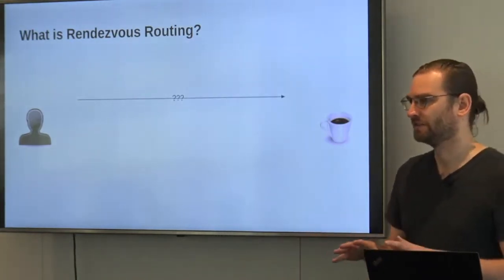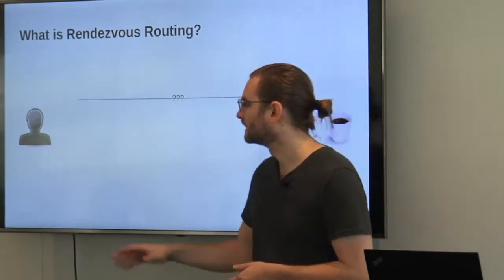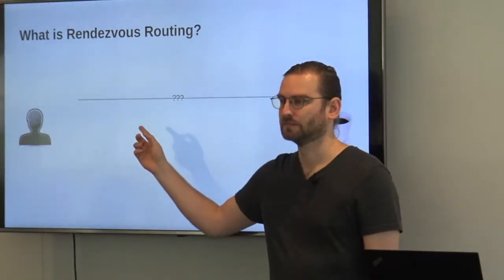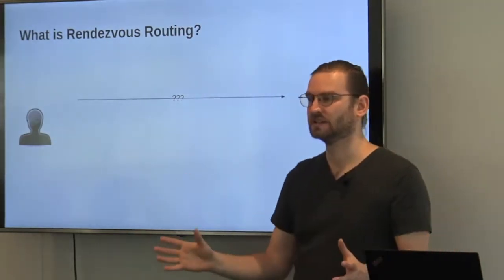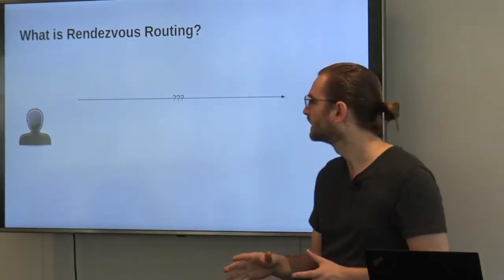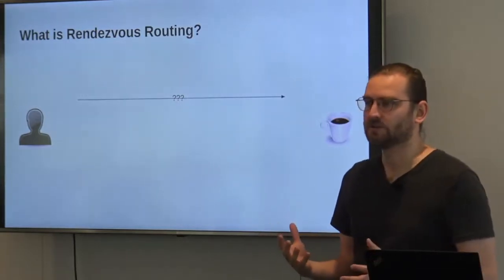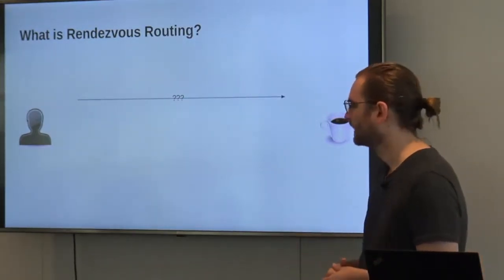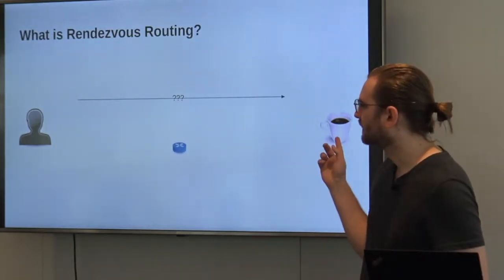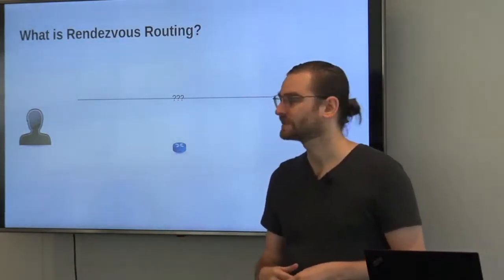It also has another feature though. What happens if I want to buy this guy and I don't know how to get there? Because this guy is basically in a hidden part of the network that is all private and I don't know how to access that part of the network. What we can do is basically this guy selects some meeting place that is somewhere in the middle between the two of us.